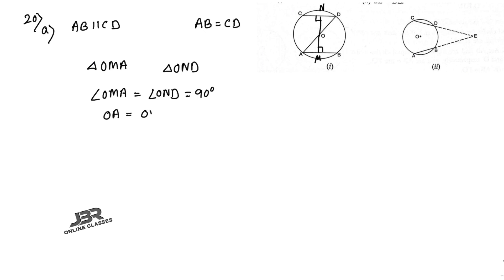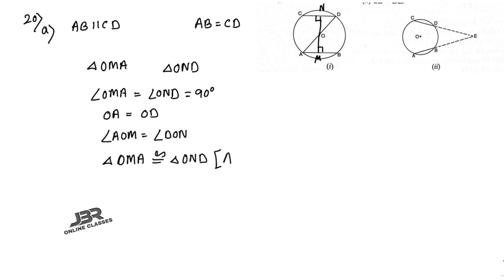Next, OA equals OD as radii of the same circle. Third, angle AOM equals angle DON — vertically opposite angles. So triangle OMA is congruent with triangle OND by AAS rule. Therefore OM equals ON, meaning AB and CD are equidistant from the center, so AB equals CD.